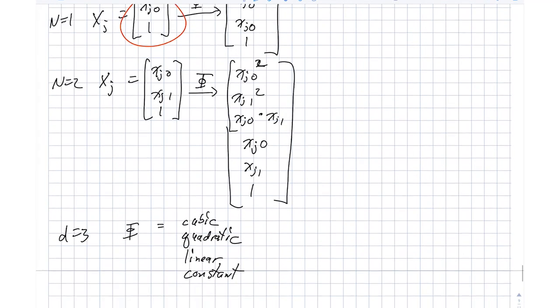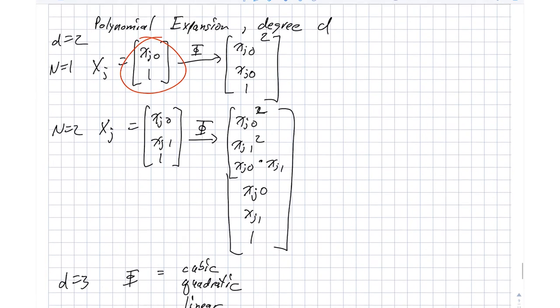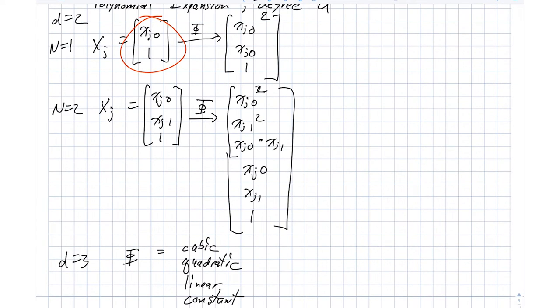And then what do we do with this? Then we can actually imagine taking this vector, multiplying it by a weight matrix, a w, in order to achieve our predictions for what yj is.